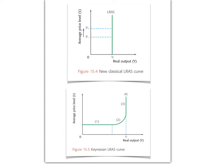The first graph we will talk about is the neoclassical or new classical long-run aggregate supply curve. The new classical economists include a number of different branches: they're called monetarists, sometimes supply-side economists, and sometimes economists from the Austrian school. In very simple terms, what these economists have in common is their belief in the efficiency of market forces and their view that there should be a minimum of government intervention in the marketplace, resulting in an efficient allocation of resources.